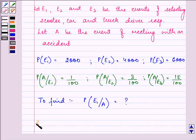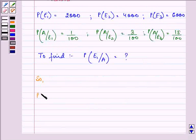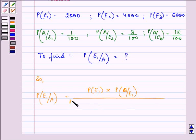So we have probability of E1 upon A equal to probability of E1 into probability of A upon E1, divided by probability of E1 into probability of A upon E1 plus probability of E2 into probability of A upon E2 plus probability of E3 into probability of A upon E3.